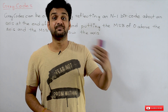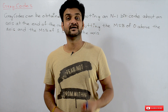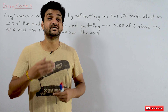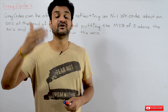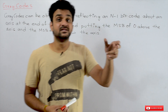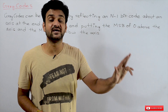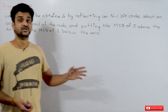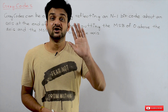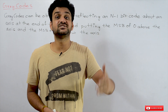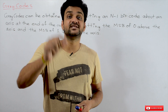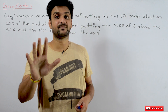Gray codes are not the same as BCD codes. The representation of a decimal number in gray codes is different from the way decimal numbers are represented in BCD codes. In gray codes, every decimal number will have a unique code, similar to binary numbers. Whereas in BCD code representation, every digit in the decimal number is going to have a different code.